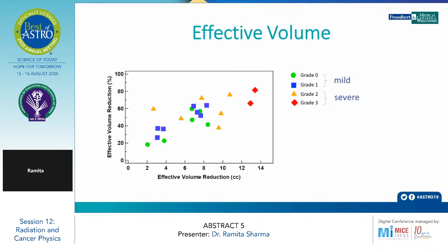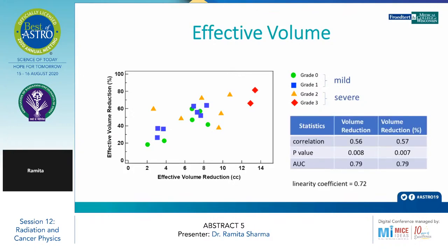This is the same data but for the effective volume. The change of effective volume was significantly smaller than the physical volume and is more correlated with the Xerostomia grade than the change of physical volume. By replacing the physical volume with the effective volume, the correlation coefficient has been increased from 0.56 to 0.72.